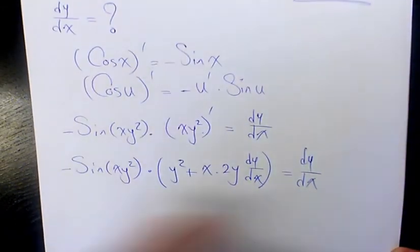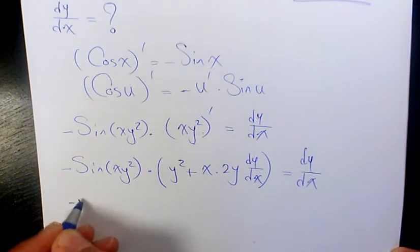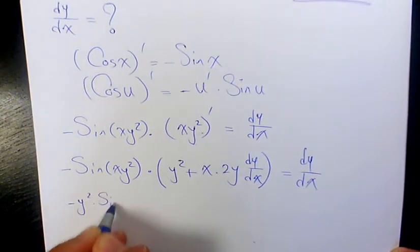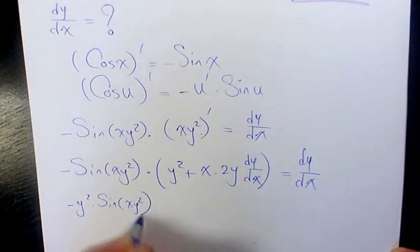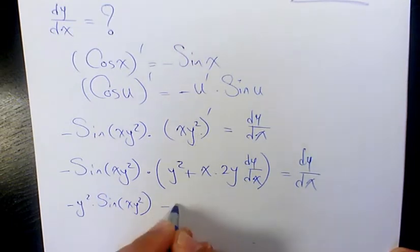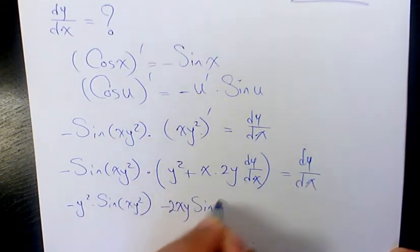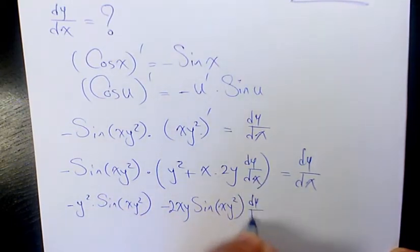Then, let's simplify it. It's going to be negative y squared sine x y squared minus 2xy sine x y squared times dy over dx equals dy over dx.